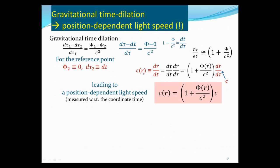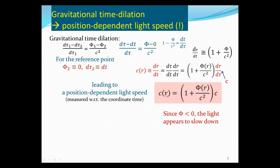The speed of light measured with respect to coordinate time, dr/dt, can be written by multiplying numerator and denominator by d_tau, giving (d_tau/dt) times (dr/d_tau). But dr/d_tau is just C by definition, and d_tau/dt equals 1 plus phi over C squared. So we get a position-dependent speed of light. Because the gravitational potential is negative, this value is less than 1, meaning the speed of light measured in coordinate time is less than C — the light appears to slow down.